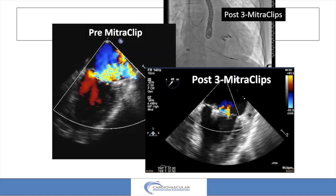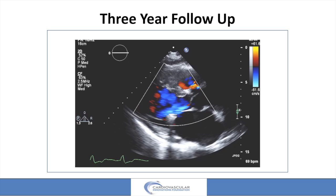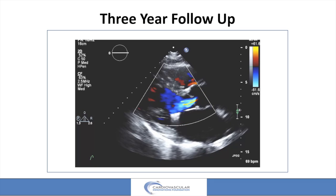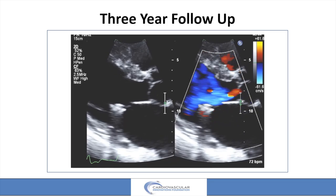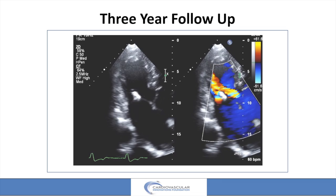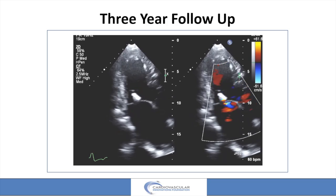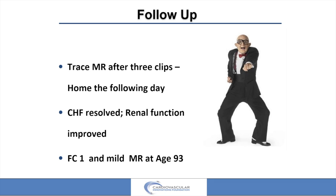Just to review: pre-clip on the left and post on the right. This is a three-year follow-up, and these really good results with the MitraClip early on are durable — trace MR, still moderate AI, but potentially no MR and no significant mitral stenosis, with a gradient of only three to four millimeters. To summarize: trace MR after three clips, home the following day, heart failure resolved, got back on the farm without trouble, renal function improved — age 93, functional class one.